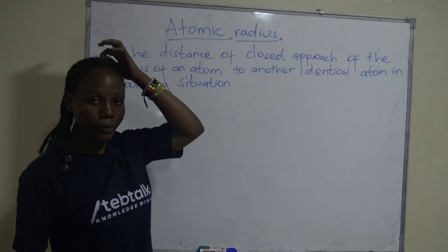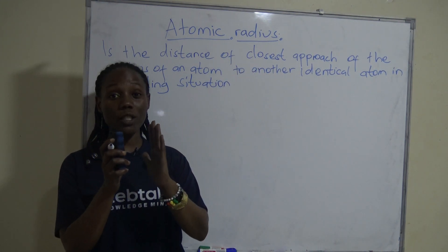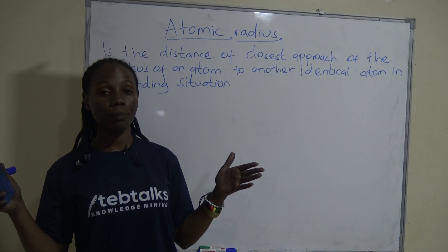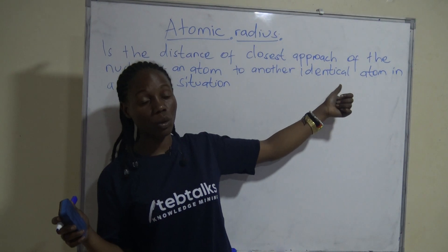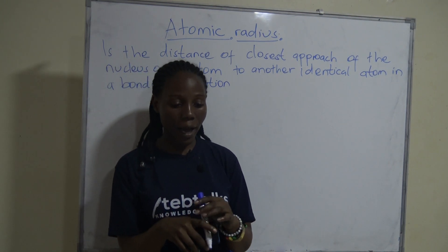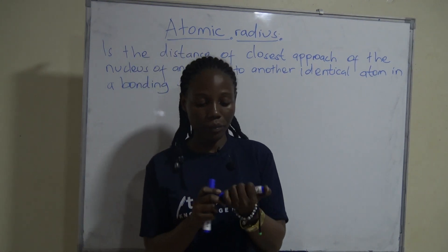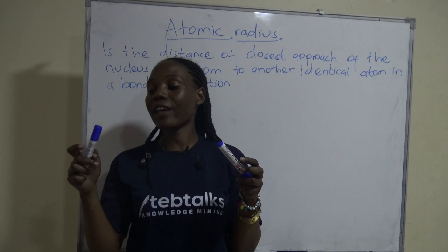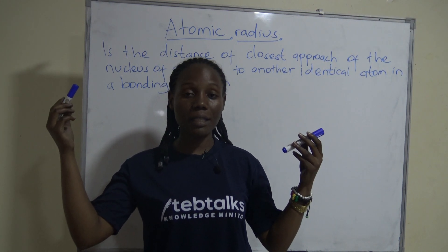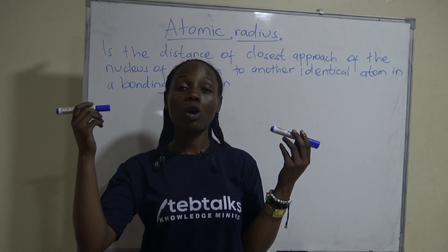Breaking down our definition: 'distance of closest approach' means there has to be closer movement of the nucleus of one atom to another. 'Identical' means the same — the nucleus of atoms of the same element moving closer. For example, using these markers, they each have a middle point. Because they are all markers, that would be like one element, so this is one atom and this is another atom.